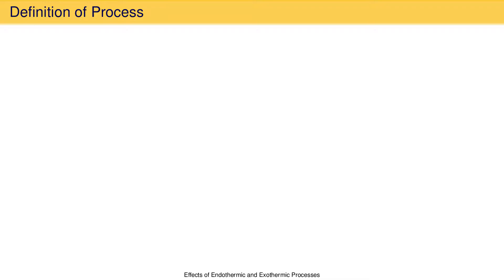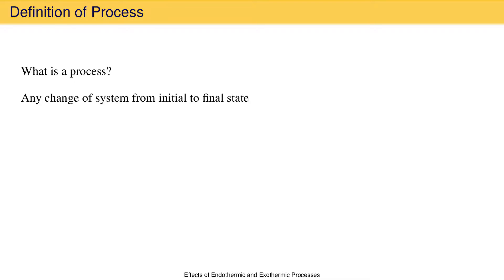When we talk about energy changes, we often refer to these changes taking place in a process. The word process is even in the title of this micro lecture. So, what exactly is a process? A process is any change in a system between an initial state and a final state. Of course, for it to be a change, the initial and final states must be different.